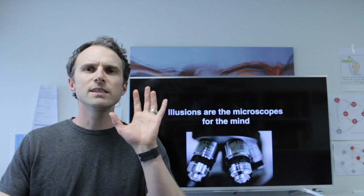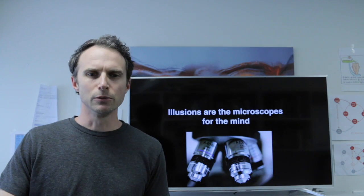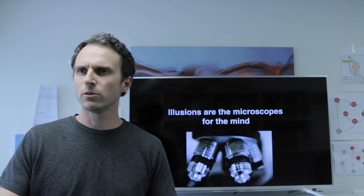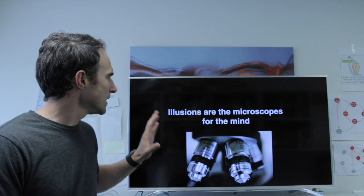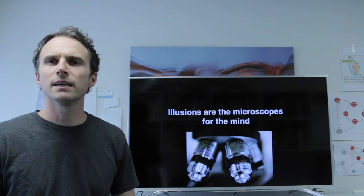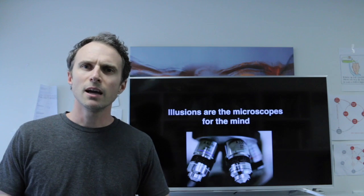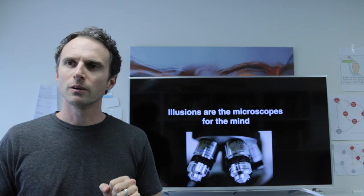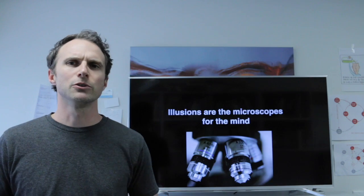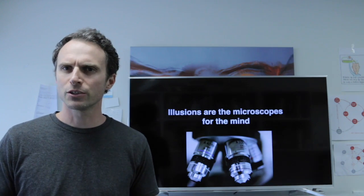So if you think of these flickering lights as a type of an illusion, you flash lights and people hallucinate. And one idea that I'm a big fan of is talking about illusions as being a microscope for the mind. Today we're talking about how we can use an illusion or hack an illusion, change an illusion to measure hallucinations.